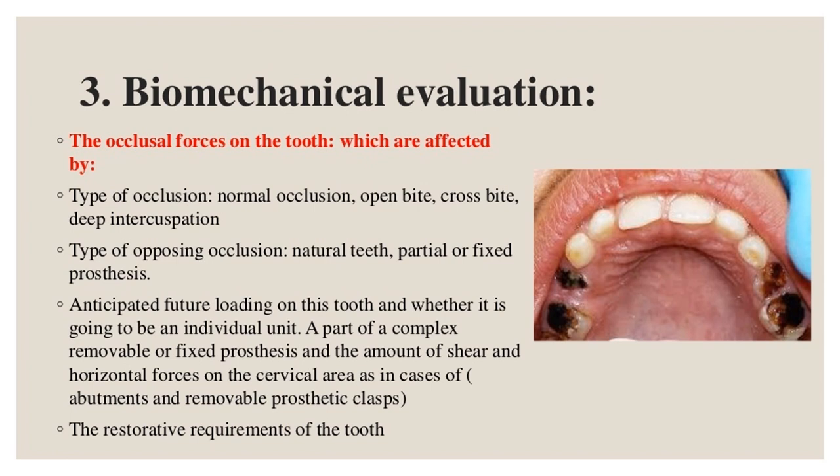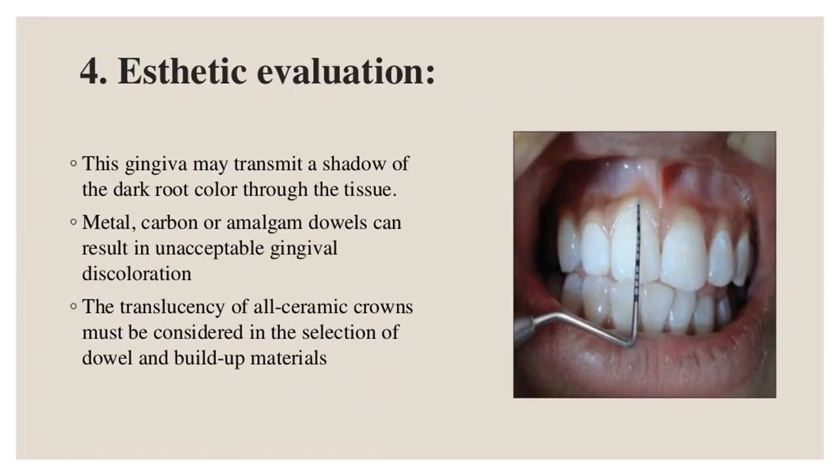Aesthetic evaluation: the gingiva may transmit a shadow of the dark root color through the tissue. Metal, carbon, or amalgam dowels can result in unacceptable gingival discoloration. The translucency of all-ceramic crowns must be considered in the selection of dowel and build-up materials.